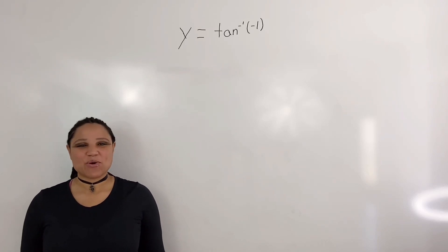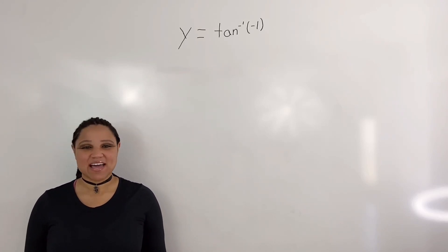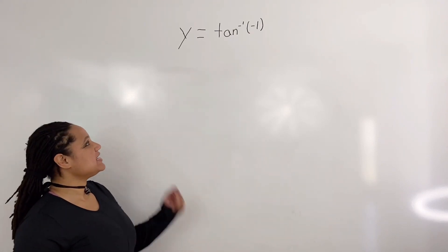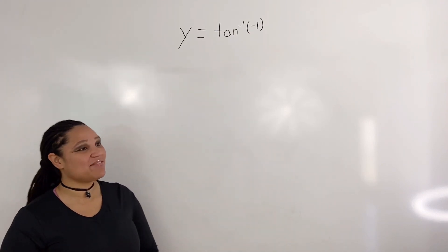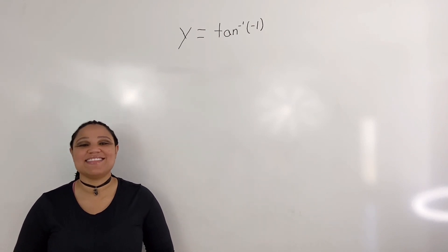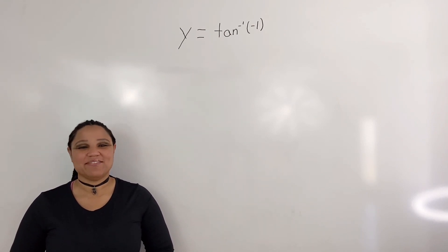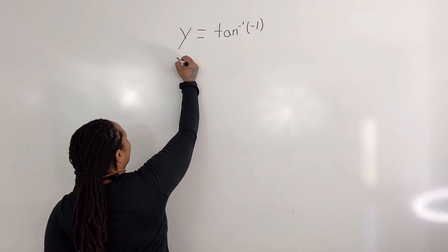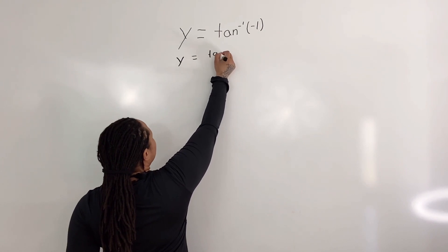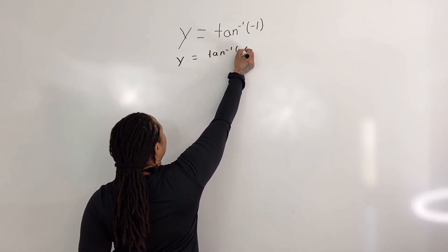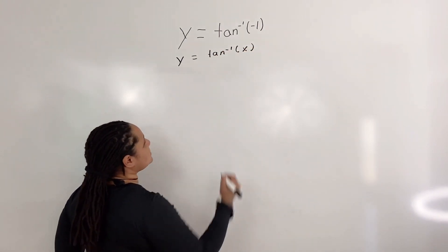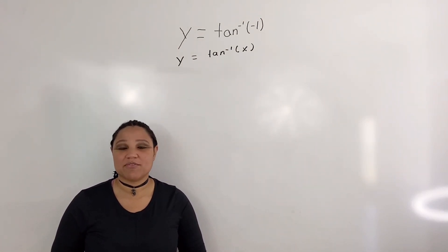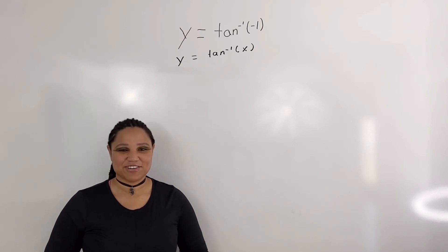In this video, we are going to find the exact value of inverse tangent. We have y is equal to tangent inverse of negative 1, and we want to find the exact value of inverse tangent. We have an equation in the form y is equal to tangent inverse of x, where x is our input value. The first thing we want to do is observe the domain of inverse tangent.